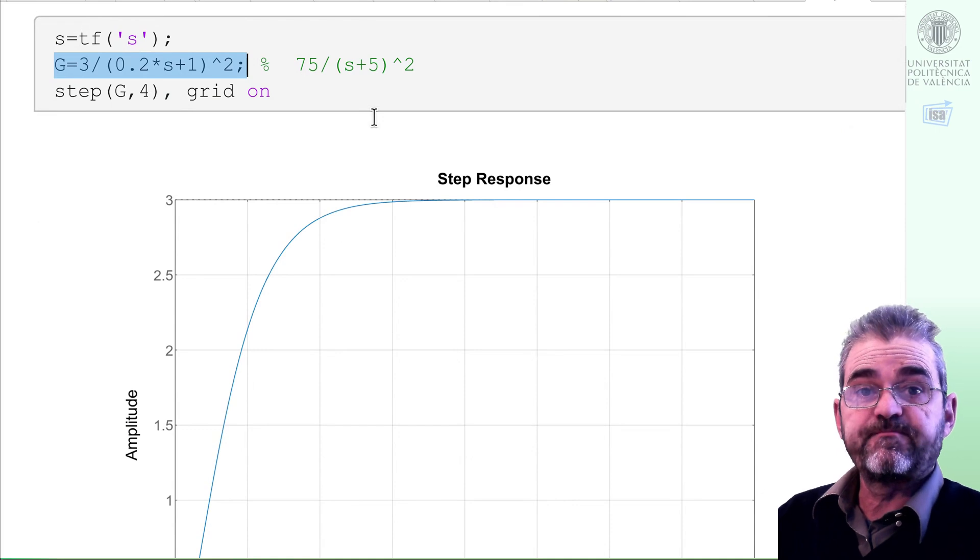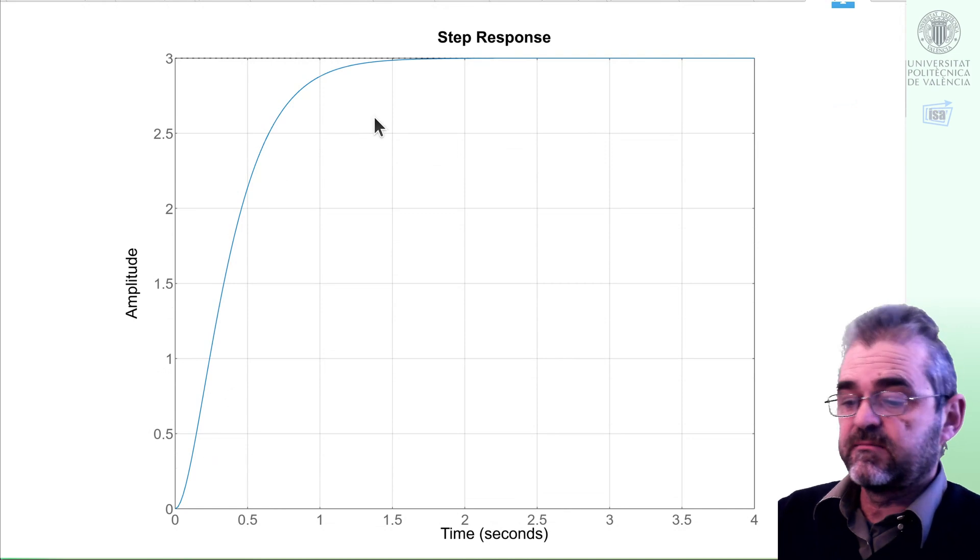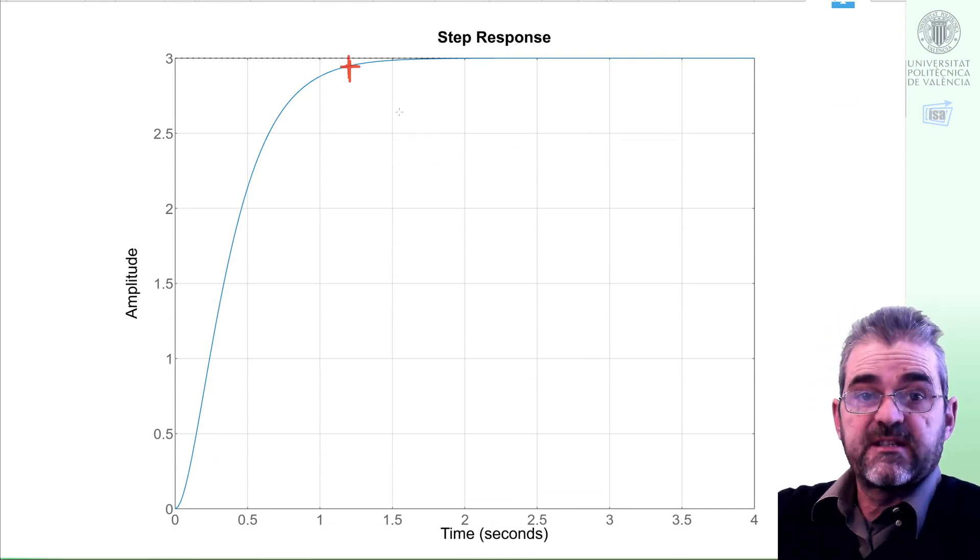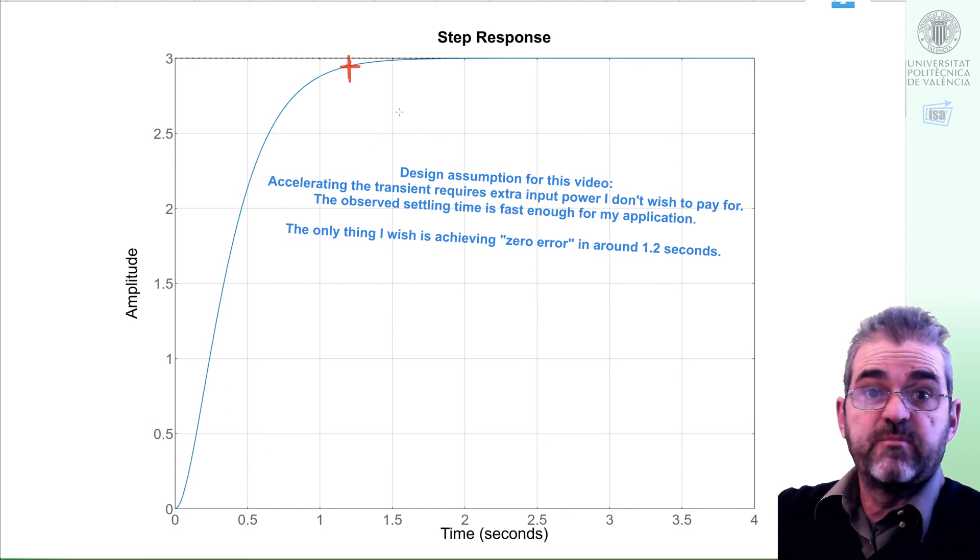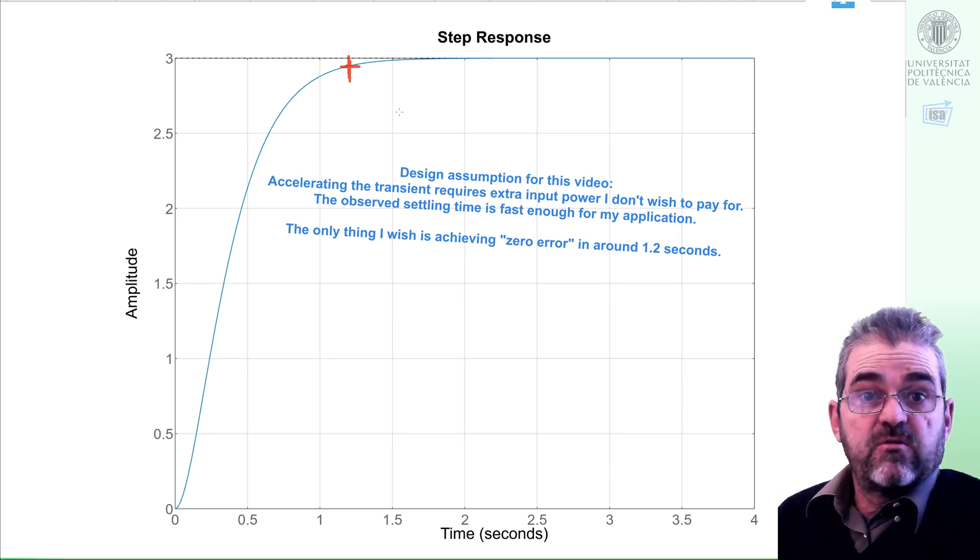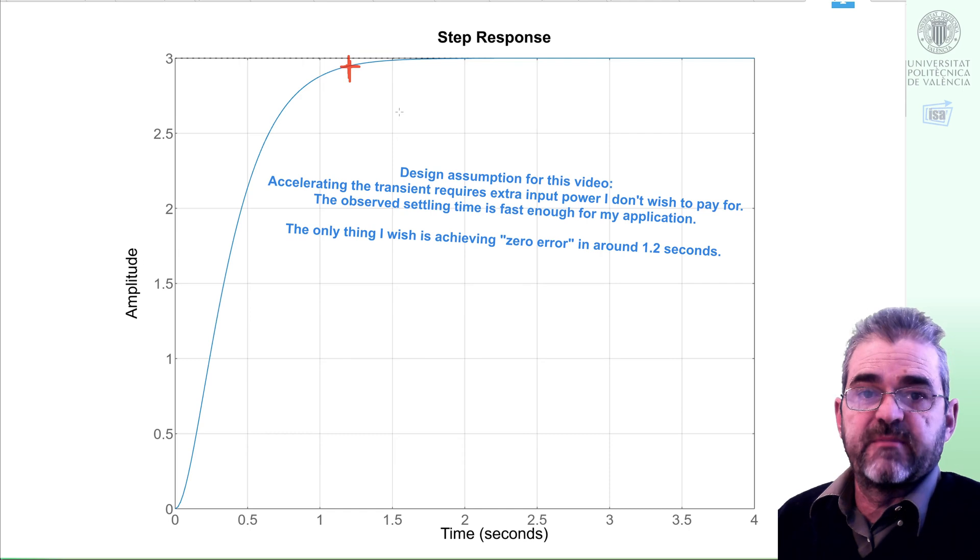This will be the open loop process with poles at 5, and if I plot its open loop step response I get this step plot. Basically 1.2 is the settling time, and if I had this in closed loop I would be happy. I think the process is fast enough and I don't wish to accelerate it because I don't wish to spend money in extra actuator power to move it faster. This is perfectly alright for me.